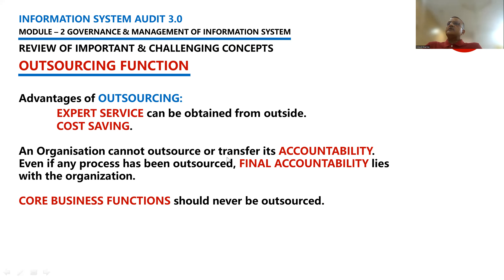An organization cannot outsource or transfer its accountability. No matter you ask someone else to do some work or execute some process on your behalf, if something goes wrong, you cannot say it is not your responsibility because you gave the work to somebody else. Many questions have been asked: can an organization transfer or outsource its accountability? The answer is a big no. Even if any process has been outsourced, the final accountability lies within the organization.